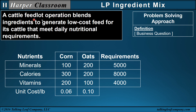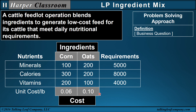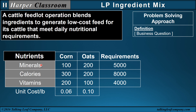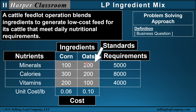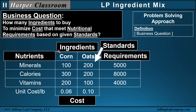The definition of the problem: a cattle feedlot operation blends ingredients to generate low-cost feed for its cattle that meet daily nutritional requirements. We start with the ingredients in the top of the table, and the cost per pound of the ingredients at the bottom. Then we have the nutrients that go into the feed from the ingredients, the minimum daily requirements of those nutrients, and finally the standards — conversion standards from ingredients to nutrients. For example, 100 units of minerals are contributed to the feed from one pound of corn, plus 300 units of calories. Each pound of oats gives 200 units of minerals, 200 calories, and 100 units of vitamins. The business question is: how many ingredients to buy to minimize cost that meet the nutritional minimal daily requirements based on the conversion standards?